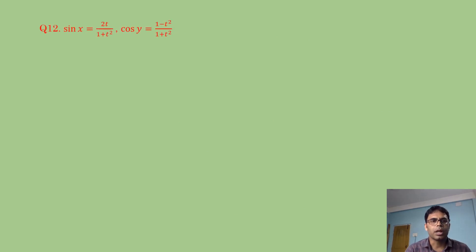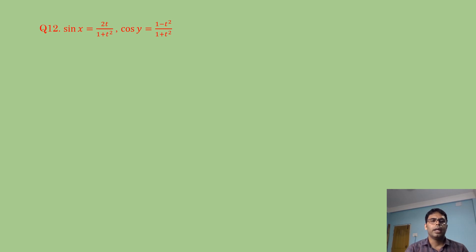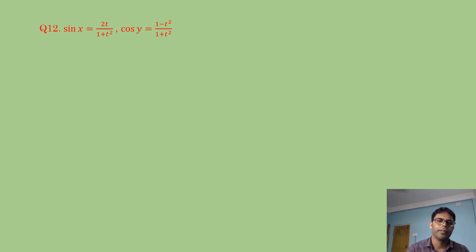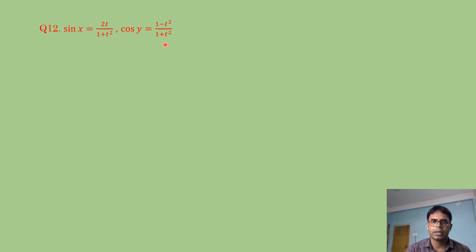We start with question number 12. In the previous class we did up to question number 11. Here the parametric function is given in a slightly different way: sin x = 2t/(1+t²) and cos y = (1-t²)/(1+t²).